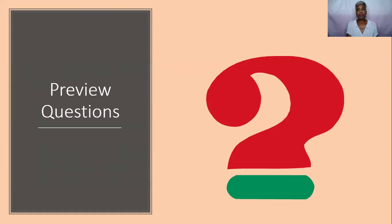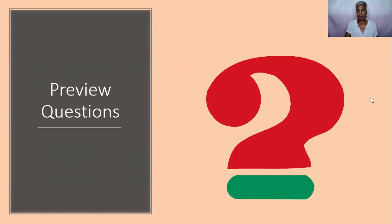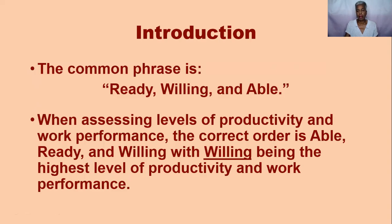Now we will go to describing the qualities and characteristics of your support staff. The common phrase is ready, willing, and able. But when it comes to assessing the levels of productivity and work performance, I have found that the correct order is able, ready, and willing — with willing being the highest level of productivity and work performance. Let's describe each level.